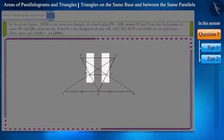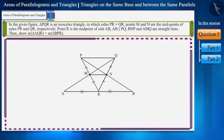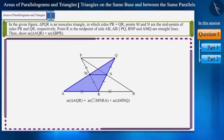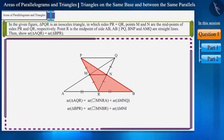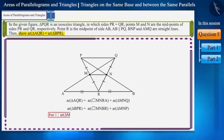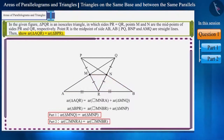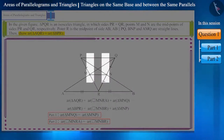Friends, you can pause the video and think of the answer. We need to prove that the areas of triangles BPR and AQR are equal. Triangle AQR is made up of quadrilateral MNRA and triangle MNQ, and triangle BPR is made up of quadrilateral MNBR and triangle MNP. We will answer this question in two parts. In the first part, we will prove that the area of triangle MNQ equals the area of triangle MNP. In the second part, we will prove that quadrilaterals MNRA and MNRB have equal areas.